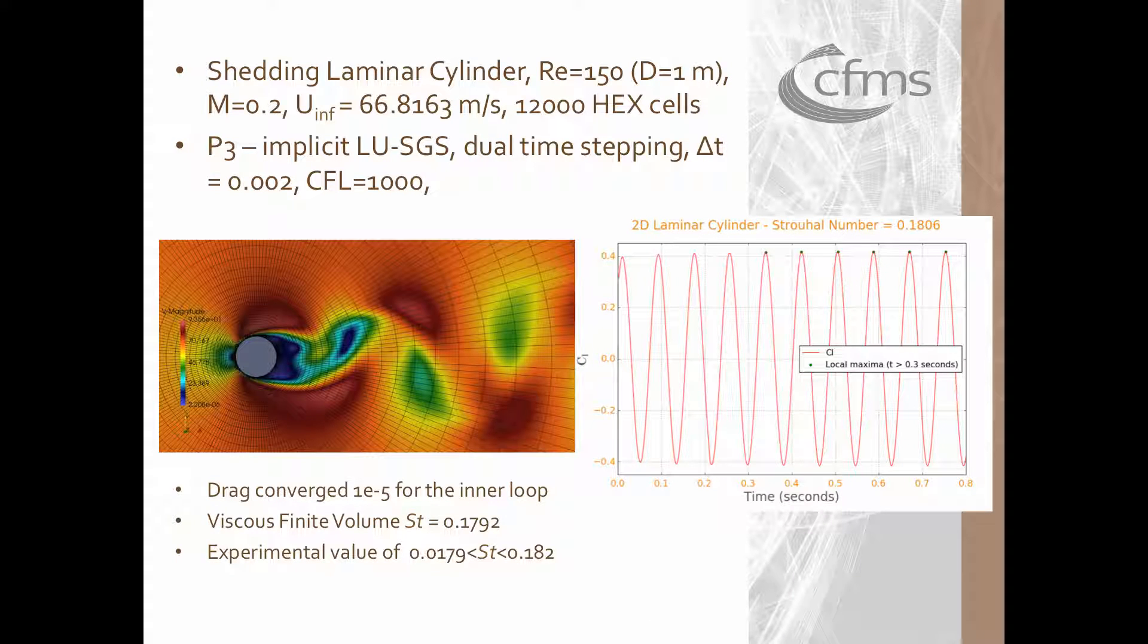As a verification test case the laminar flow over a cylinder has been considered in order to check the temporal accuracy of the solver at Reynolds number equal to 150 based on the diameter of the cylinder. The Mach number for this flow was 0.2